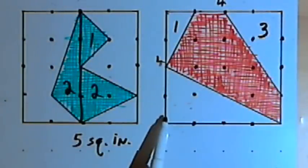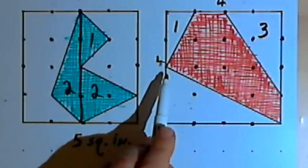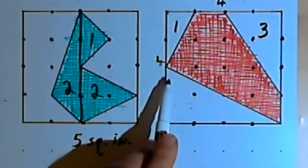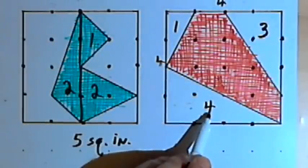The triangle down here at the bottom has a base of 4 and a height of 2. 2 times 4 is 8. One-half of 8 is 4. So this has an area of 4 square inches.